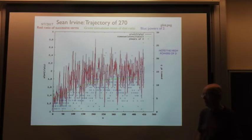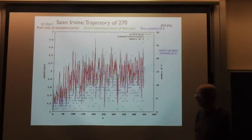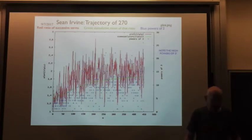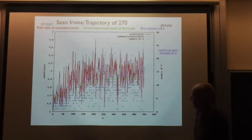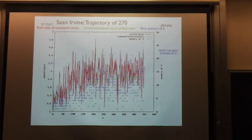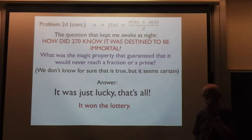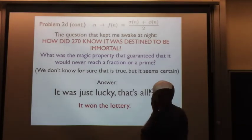I spent quite a bit of time trying to figure out what was special about 270. How did 270 know that it was the first one — the chosen number — that from then on it would never reach a fraction or a prime? How did it know what was special about 270? How did it know it was immortal? Well, I thought about this. In Hebrew gematria, the numerical value of the Hebrew word for 'bad' — B-A-D — is exactly 270.